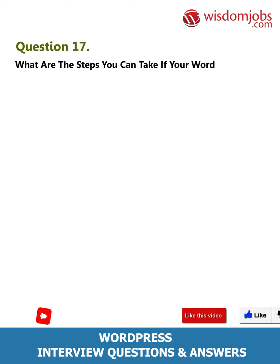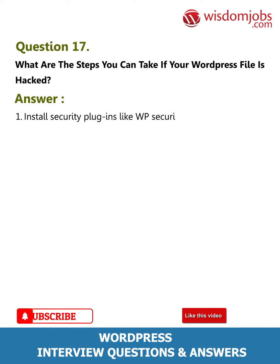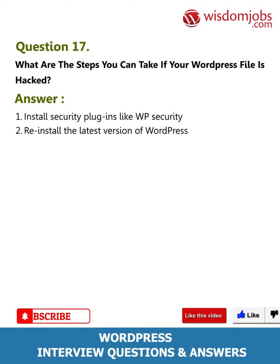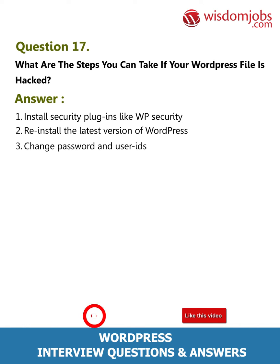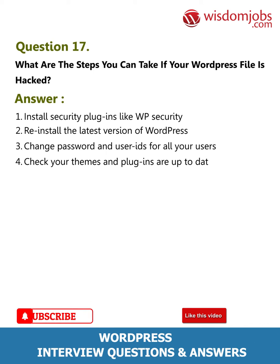Question 17: What are the steps you can take if your WordPress file is hacked? Answer: 1) Install security plugins like WP Security. 2) Reinstall the latest version of WordPress. 3) Change the password and username for all your users. 4) Check that your themes and plugins are up to date.